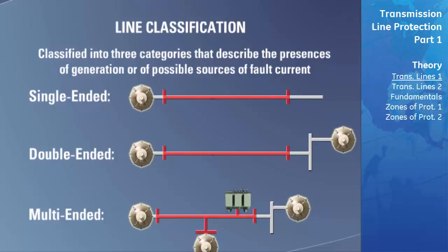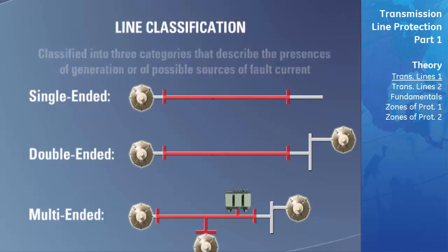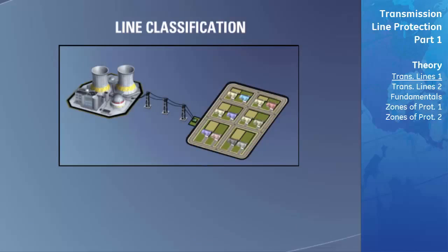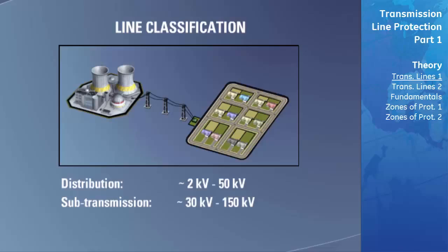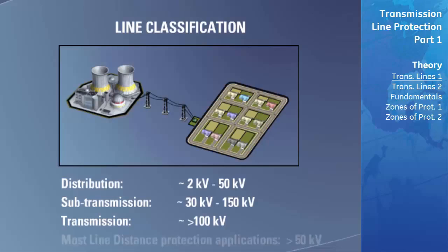Sometimes the transmission line itself will be tapped to provide a source of power to a load. Distance protection is one method of protecting a transmission line in this configuration and will be covered in detail later. The voltages used for transmission are split into three categories: distribution levels, in the range of 2 kilovolts to 50 kilovolts; sub-transmission levels, in the range of 30 kilovolts to 150 kilovolts; and transmission levels, which are greater than 100 kilovolts. Most applications using distance protection are 50 kilovolts or greater.